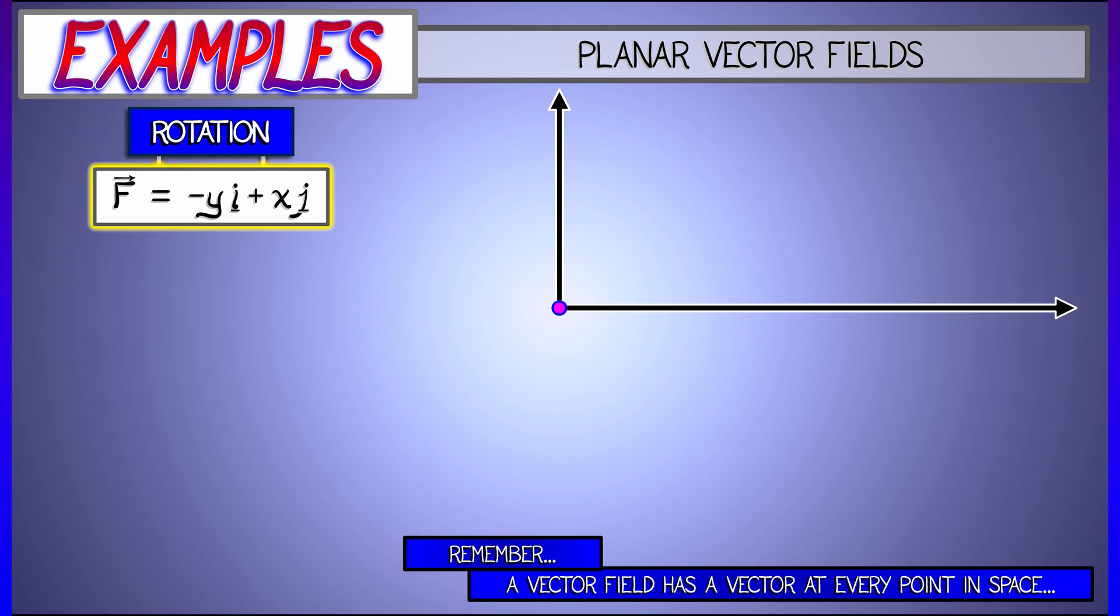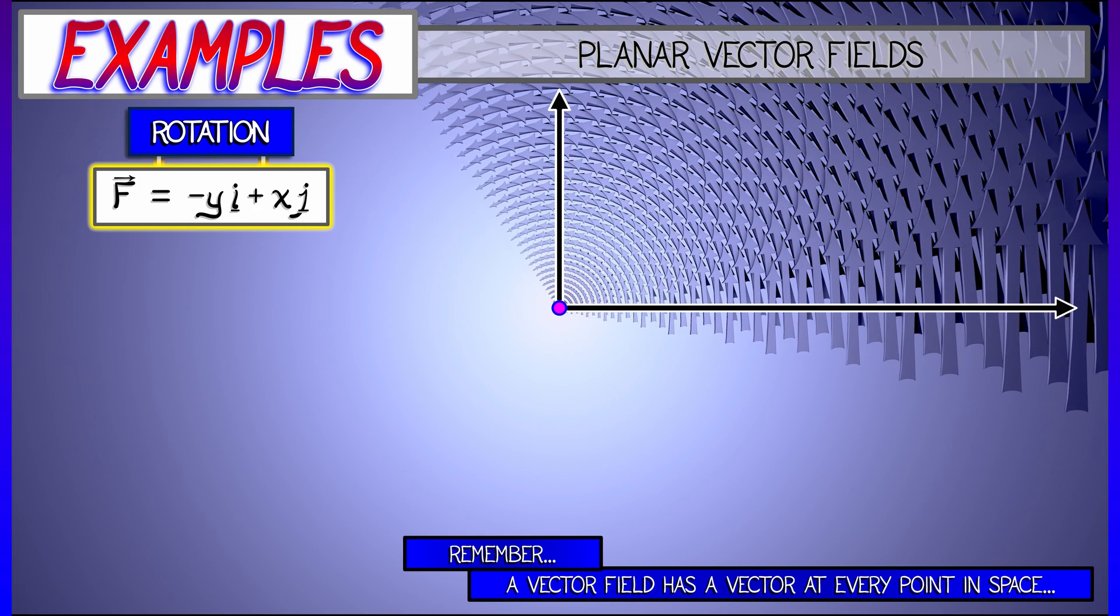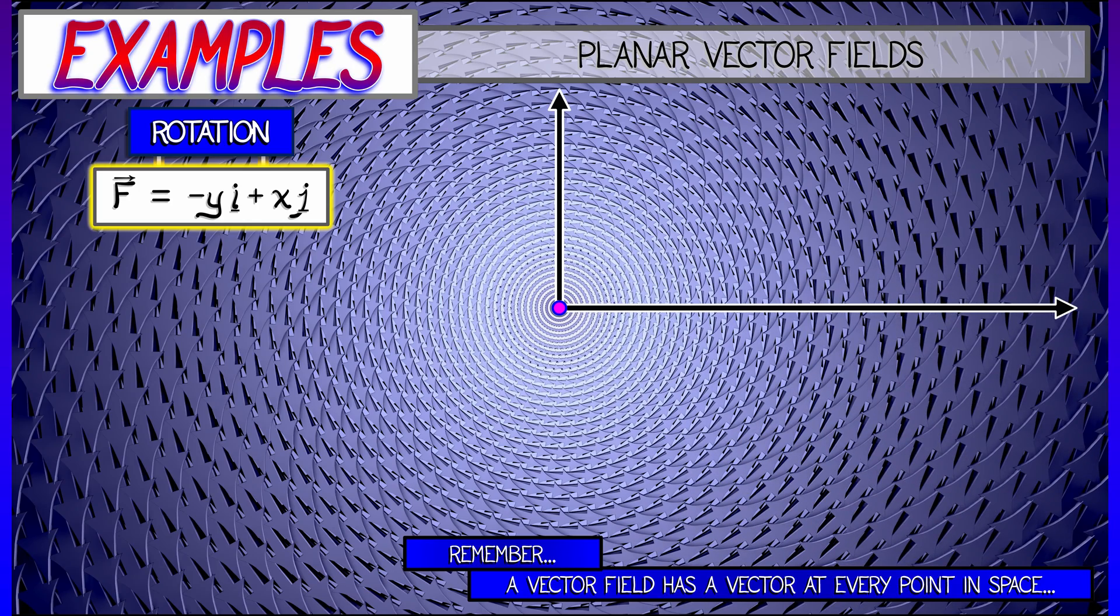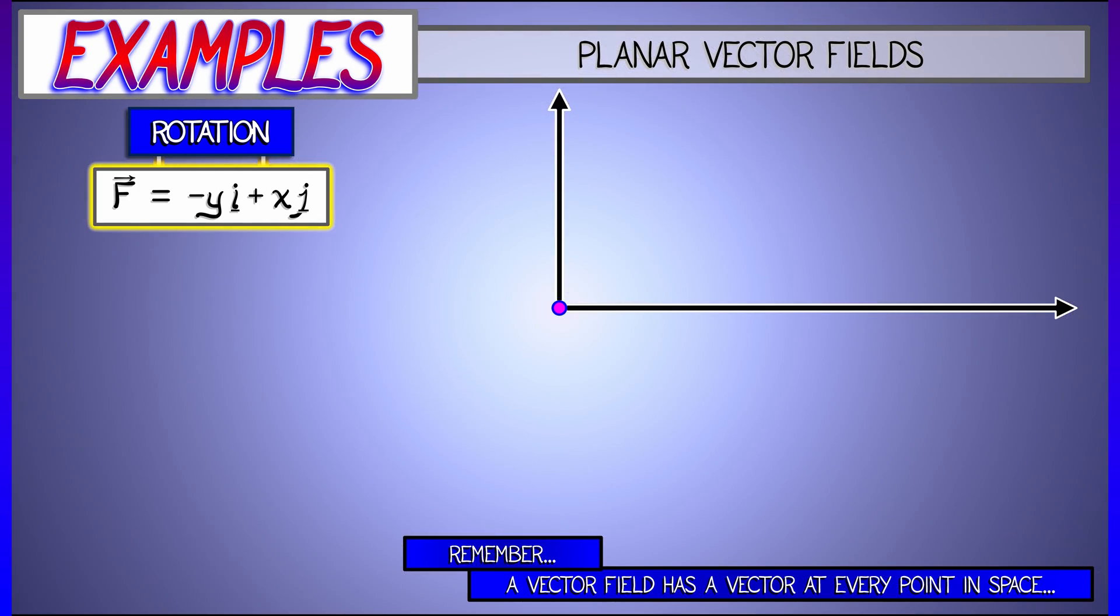Consider the vector field in the plane given by minus yi plus xj. This is rightly described as a rotational vector field. Think about it. At the origin, it vanishes.